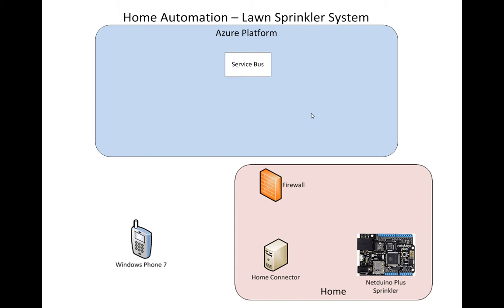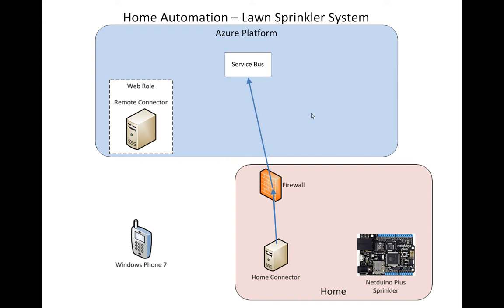A couple other components I have are what I call a home connector, which sits behind my firewall and opens up communications with the service bus, as well as a remote connector that services requests from the Windows Phone 7. This works by the home connector making an outbound connection through the firewall that opens up a communications channel to the service bus, basically letting the service bus know it's ready for messages.